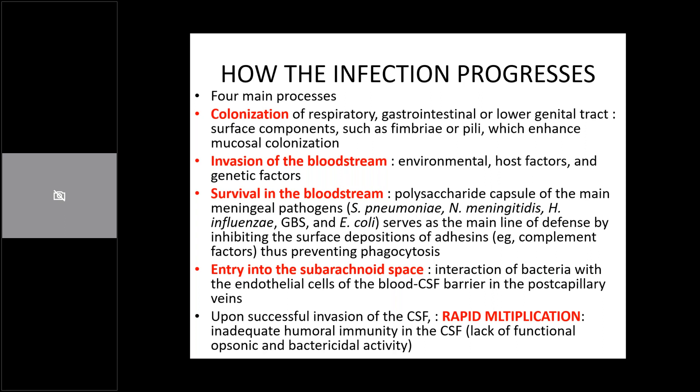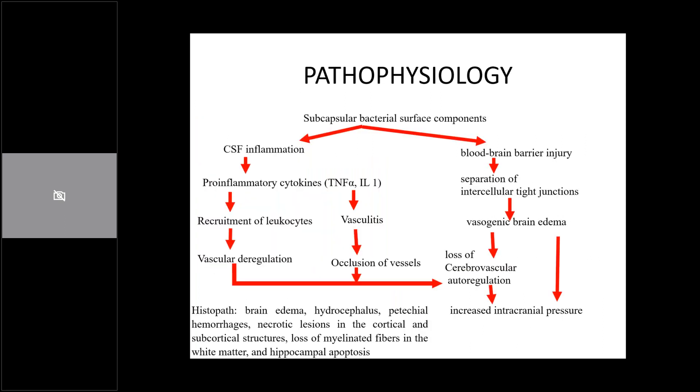Once in the subarachnoid space, the patient rapidly has symptoms of serious infection. It starts as a prodrome when entering the GI or respiratory system — the patient will have cough, cold, nasal discharge, abdominal discomfort, loose stools. Then as it enters the brain the patient develops encephalopathy; if the meninges are involved, nuchal rigidity follows, then seizures and features of increased intracranial pressure.